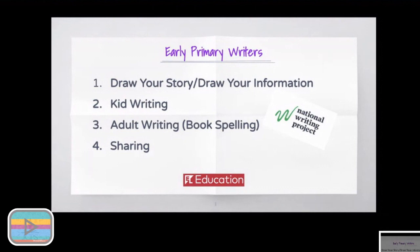In this process, they draw a story or draw their information. Then they go into kid writing — stretching out words, using approximations, their best spelling, the word wall, the things they have access to in order to capture their thoughts on paper. The third step is what the National Writing Project calls adult spelling — but I call it book spelling, because not every adult spells well, and we don't want to assign perfection to adults. Then they're sharing, because their voices deserve to be heard. They go through this cycle of flexing their writing muscles and become more fluent writers.